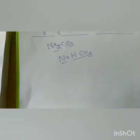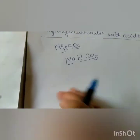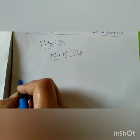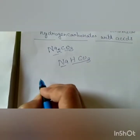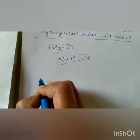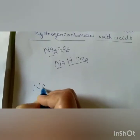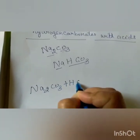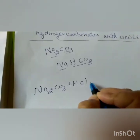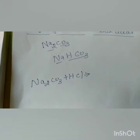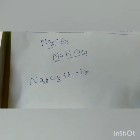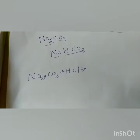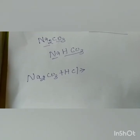Now let us see the action of acid on metal carbonate and metal bicarbonate. In test tube A we have taken sodium carbonate Na₂CO₃, and we are adding HCl. You will see that a gas is liberated, and when that gas is passed through lime water, lime water turns milky — showing that the gas liberated is carbon dioxide, because CO₂ is the gas which turns lime water milky.